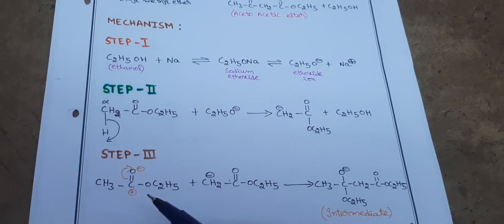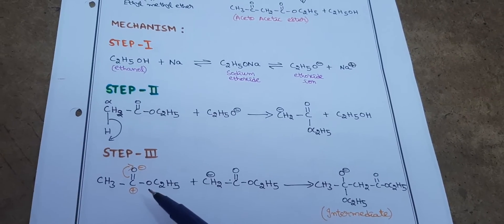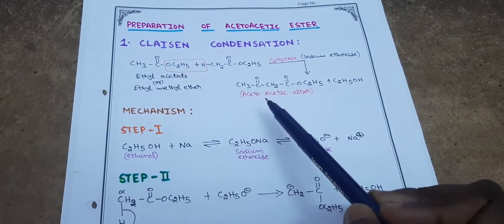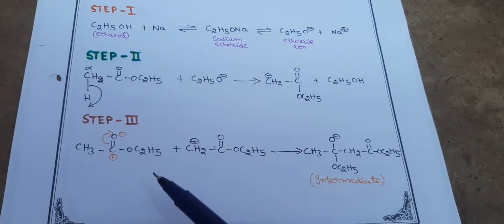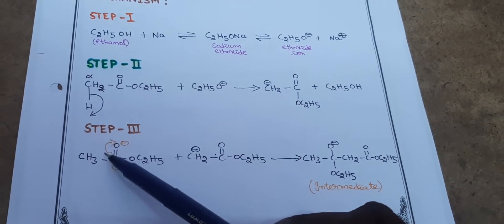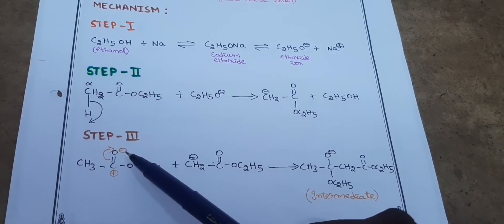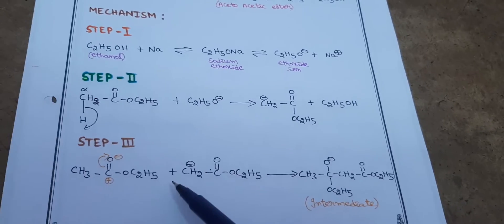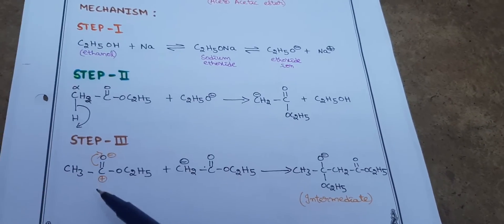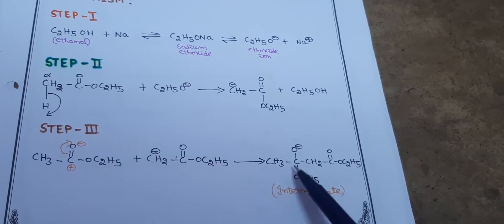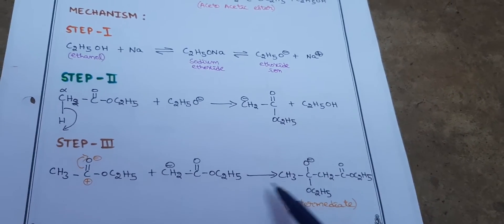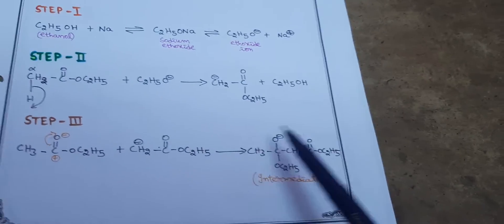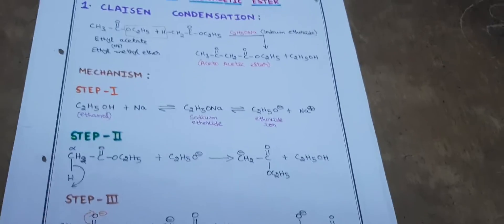Step 3: The product formed in Step 2 reacts with another mole of ethyl methyl ether — that is the second of the two moles. The C2H5O- is removed, and a bond shift occurs toward the oxygen, forming a negative charge on oxygen and a positive charge at the carbon simultaneously. These charges combine to form a bond, yielding the intermediate: CH3-C(O-)-OC2H5 along with CH2-C(=O)-OC2H5. This is the intermediate of the Claisen condensation reaction.